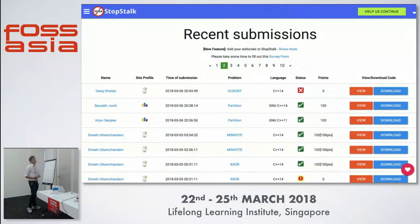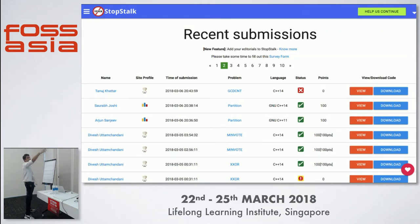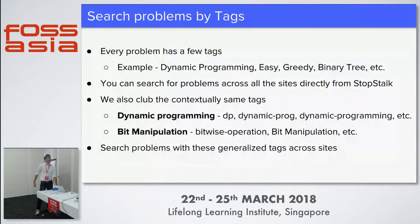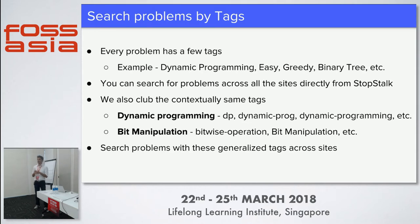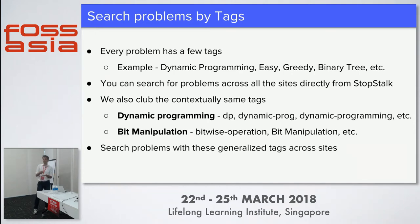The dashboard looks something like this right now. Each row is a submission with user, site profile - the same things as before. You also have an option to view or download that code directly from StopStalk. What you can also do is search problems from tags. Every problem has some specific tag - tag being something like dynamic programming, easy, greedy, or binary. That's what the problem requires you to solve.